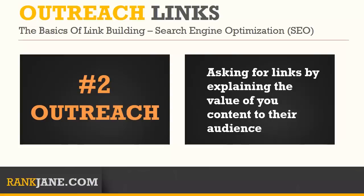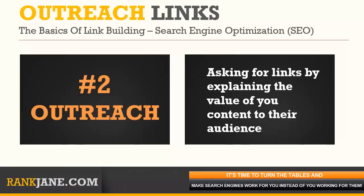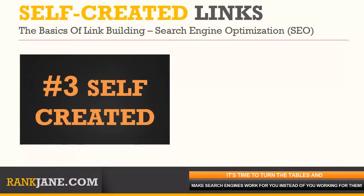The next type of link is outreach — this is when you simply ask for links. A good way to ask is to explain why your content is of value to someone else's audience. You could send an outreach email saying, 'Hey, I just wrote this blog post, I know your site is about a similar topic, I think your audience might find it useful — would you link to it?' You don't always get the link, but outreach is a great way to get started building links, especially when you're new.